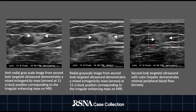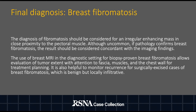Ultrasound-guided biopsy was subsequently performed, which led to the diagnosis of breast fibromatosis. The diagnosis of fibromatosis should be considered for an irregular enhancing mass in close proximity to the pectoral muscle. Although uncommon, an adequately sampled irregular enhancing mass detected on breast MRI with pathology showing fibromatosis should be considered concordant. The use of breast MRI for biopsy-proven fibromatosis allows for anatomic evaluation of tumor extent, which can involve underlying pectoralis fascia, muscles, and chest wall.